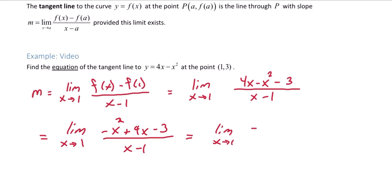We have negative x, x and we have negative 1 and negative 3 in the parentheses all over x minus 1.